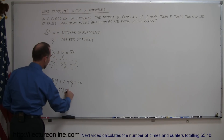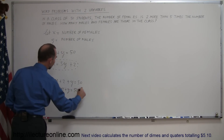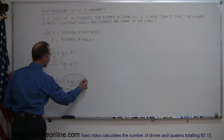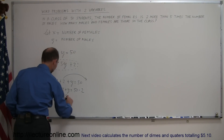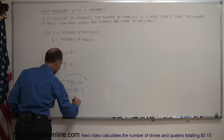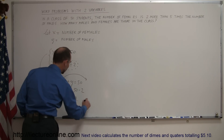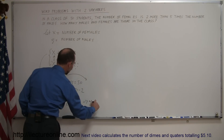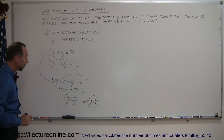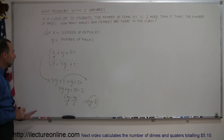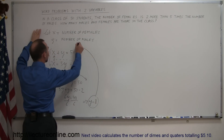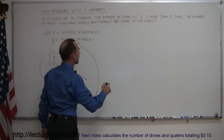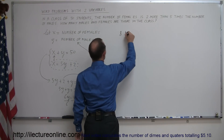Now put all the y terms together and numbers on the other side: 5y plus y equals 50 minus 2, because when 2 moves across the equal sign, the sign changes. Combining like terms gives 6y equals 48. Dividing both sides by 6, y equals 8. Since y represents the number of males, there are 8 males in the class.